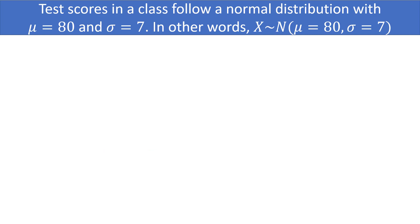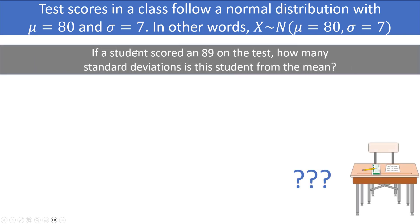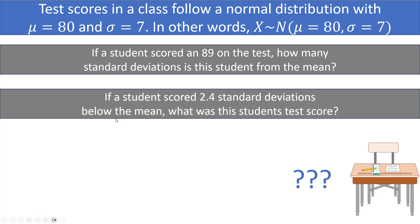Here is a problem for you to try. Test scores in a class follow a normal distribution with a mean of 80 and a standard deviation of 7, so X ~ N(80, 7). First, if a student scored an 89 on the test, how many standard deviations is the student from the mean? This is asking you to find the Z score. Second, if a student scored 2.4 standard deviations below the mean — a Z score of negative 2.4 — what is the student's test score? This is asking for the raw score X. Use each of the two formulas to find the answers.